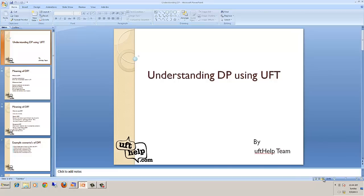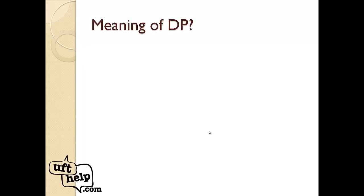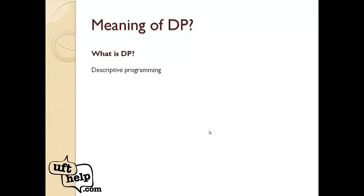Welcome friends, today we are going to discuss Descriptive Programming using UFT. DP stands for Descriptive Programming — it's basically a smart way of automation using UFT. That's the basic definition: DP is Descriptive Programming and the smartest way of automation.